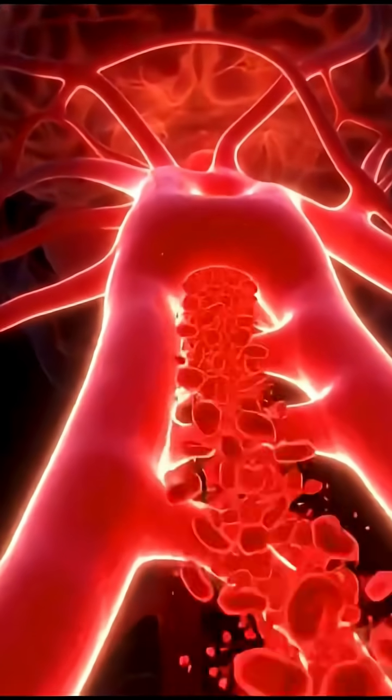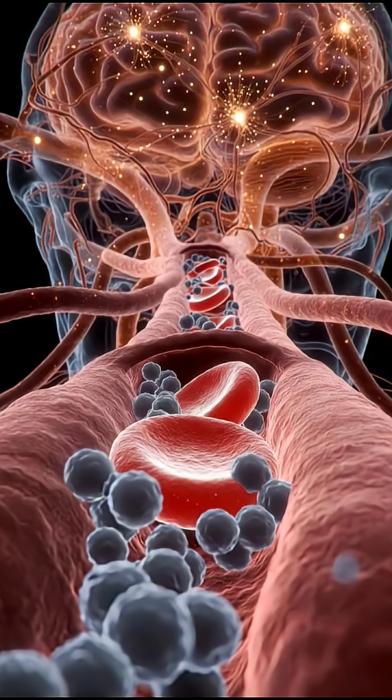Cilia, the tiny hair-like cleaners of your lungs, become paralyzed, allowing toxins to linger.